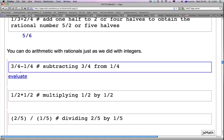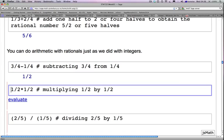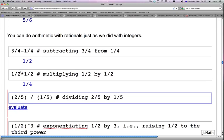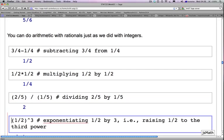And here is an example of subtracting 3 quarters from 1 quarter. You get 1 half, and multiplying half by itself, half by half is 1 quarter. And we can do division of rational numbers as well. 2 fifths divided by 1 fifth is simply 2.